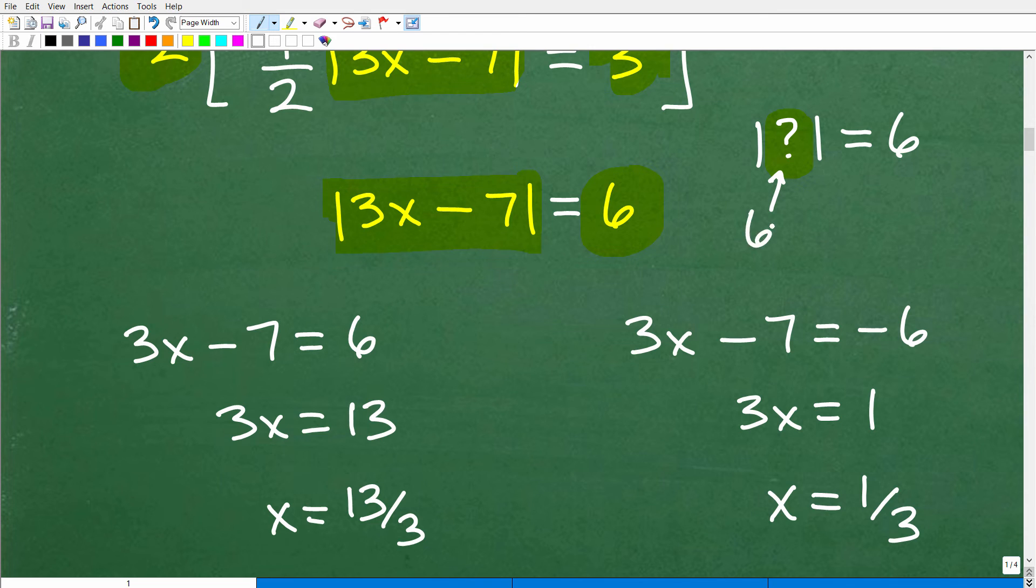Okay, so hopefully some of you said, well, you could take 6 and plug it in there because absolute value of 6 is positive 6, but you can also plug in a negative 6 because absolute value of negative 6 is also a positive 6.